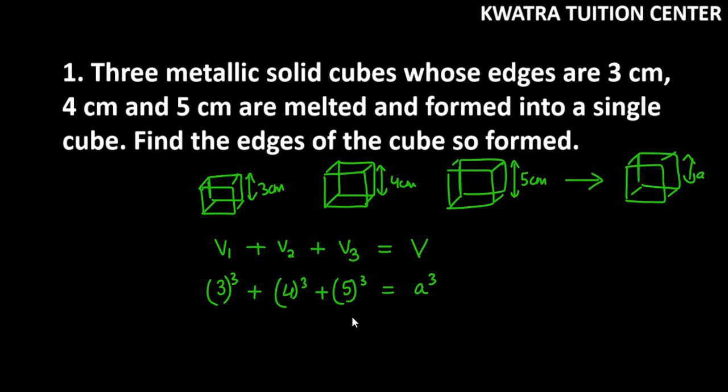Now you have to take cube of all the numbers. So 3 cube is 27, 4 cube is 64, just a second, this is 64.